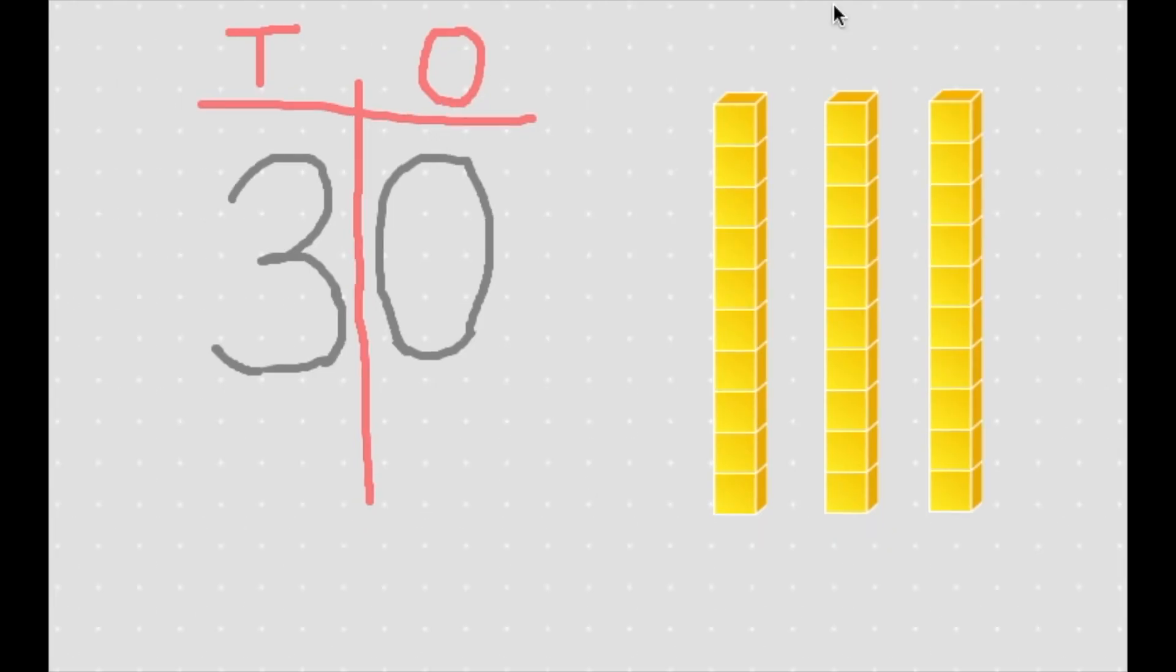So what happens if I add one more long? Let's see. When I add one more long, it's the same as adding one 10. We started with 30 with three longs and we add one more. So our number sentence would be 30 plus 10. What is 30 plus 10? Let's count our longs.